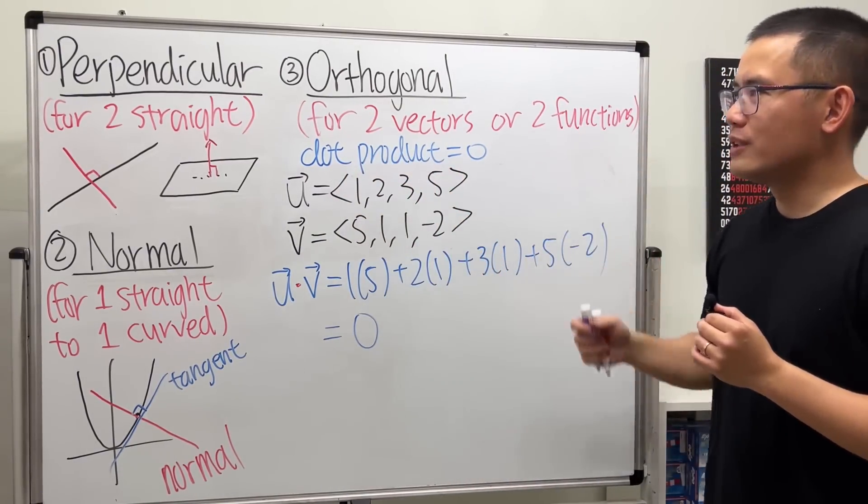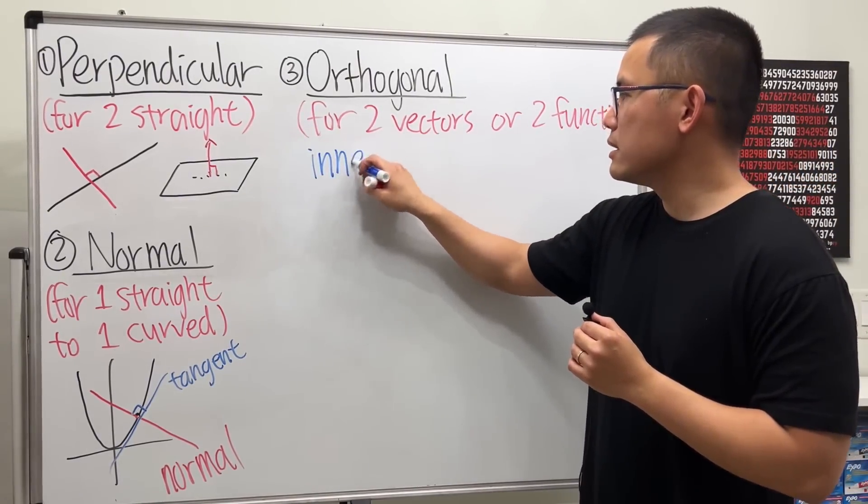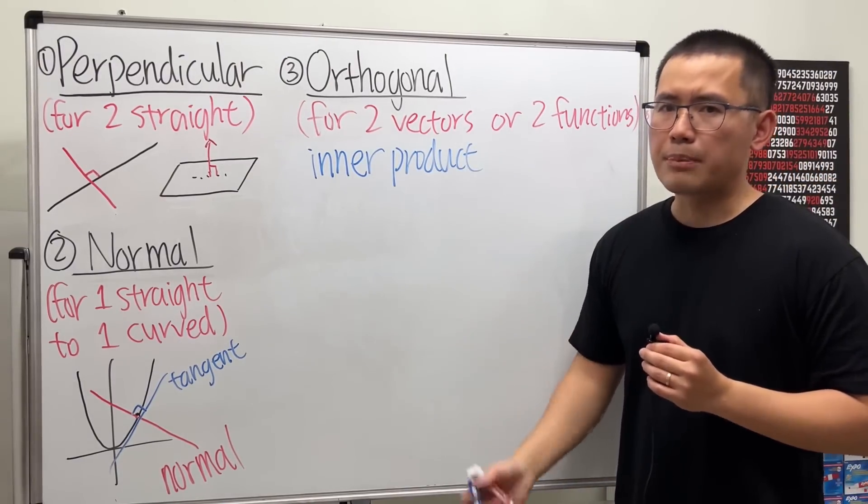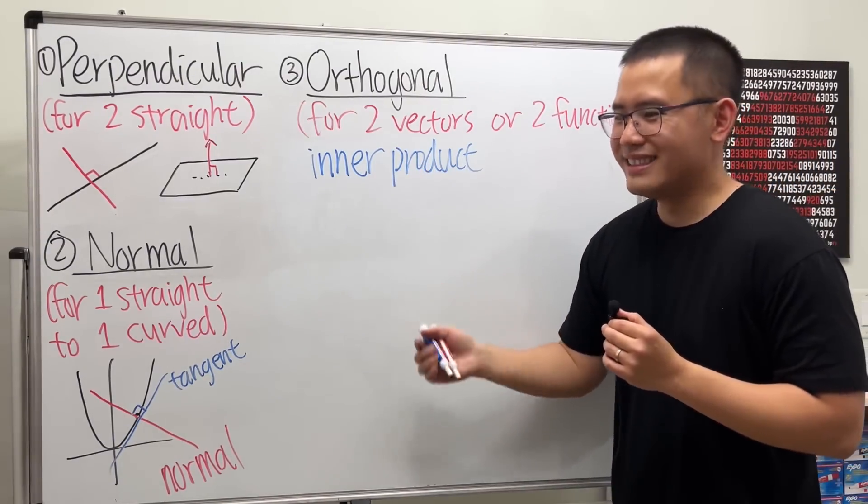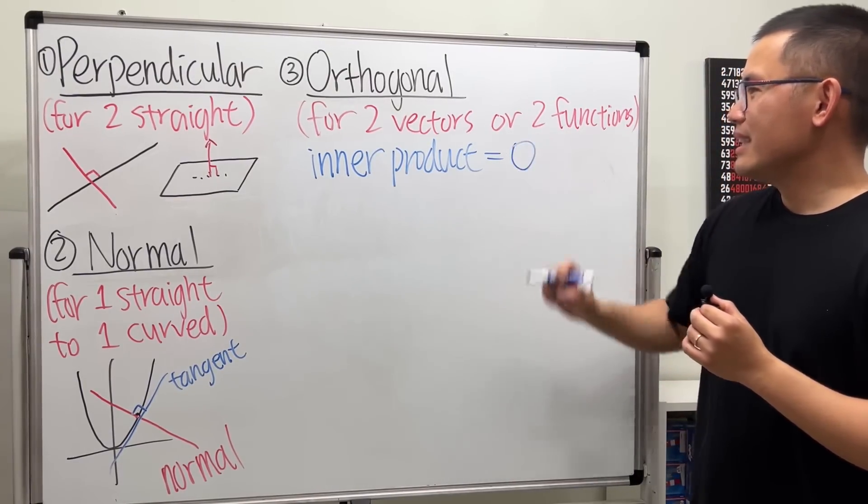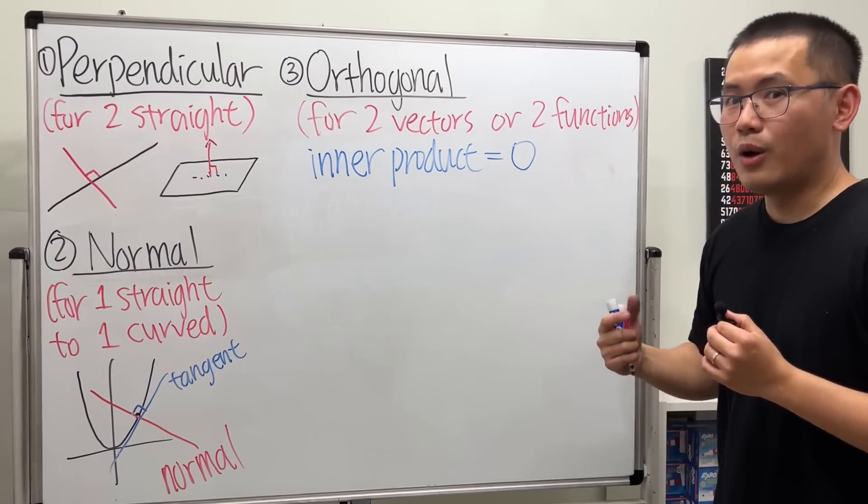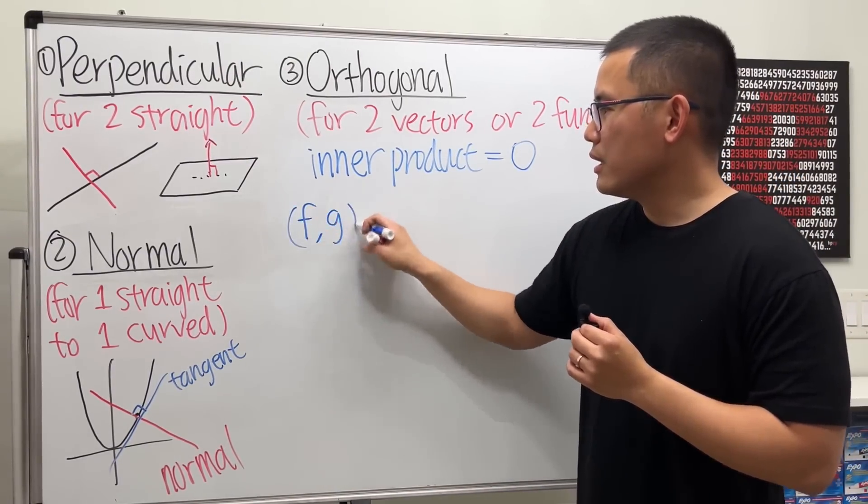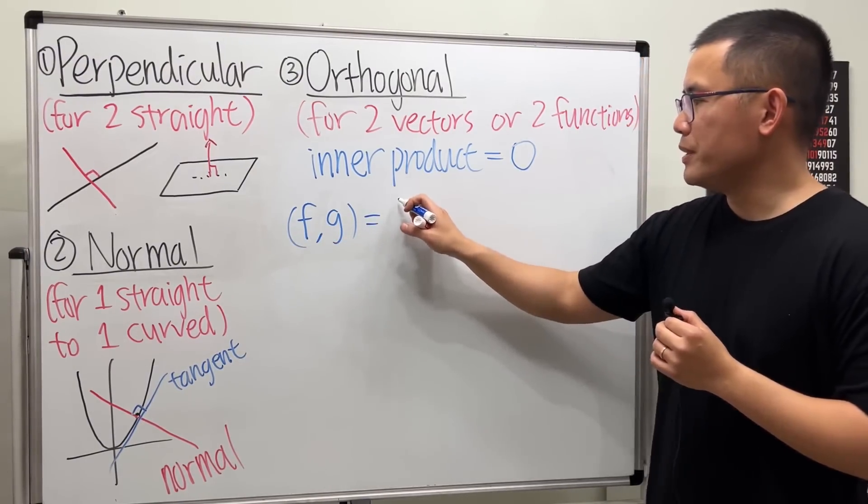Now, how can two functions be orthogonal? For two functions, we will have to talk about the inner product. And you might be wondering, is the inner product the same as the dot product? Yes, for vectors. And for functions, let's just use the term inner product. Again, two different words, they pretty much have the same idea. So if the inner product of two functions equals 0, then the functions are orthogonal. So what do I mean though? The definition is, first, this is the notation: (f, g) with parenthesis and comma. The inner product is defined to be, ready? The integral going from a to b.